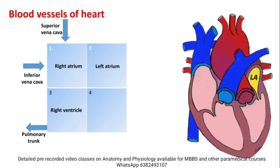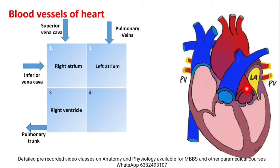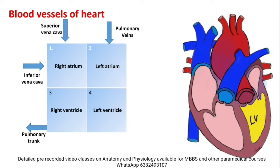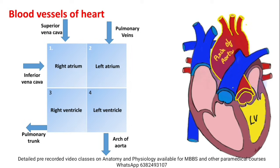At the left atrium of the heart, 4 pulmonary veins are also connected. These 4 pulmonary veins bring blood into the left atrium. At the left ventricle, the arch of the aorta is also connected. This is the arch of the aorta, which is connected to the left ventricle of the heart.